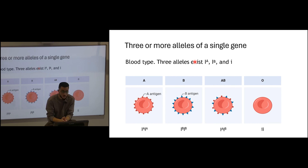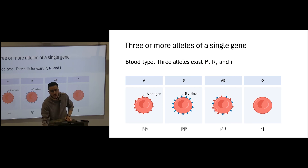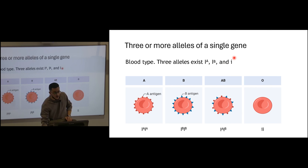Let's start with three or more alleles. We saw this example when we were talking about co-dominance: blood type. There are three alleles for it — the A allele, the B allele, and then the small i, which is the null allele. If you have I-A, you have A antigens on your blood cells; if you have B, you have B antigens; if you have both, you end up with AB antigens; and if you have the small i, you end up with null antigens.